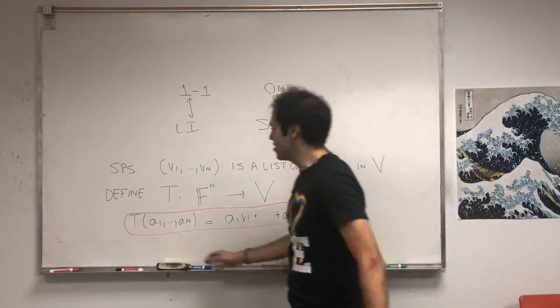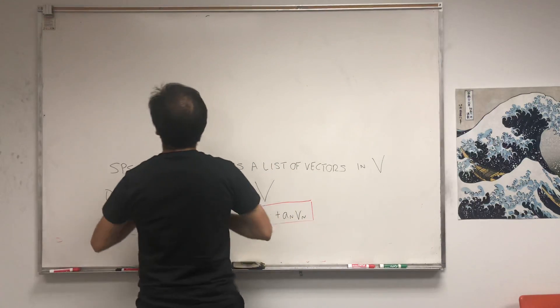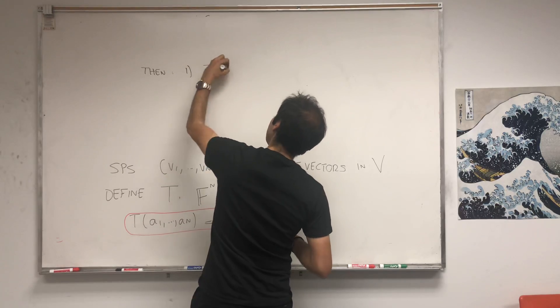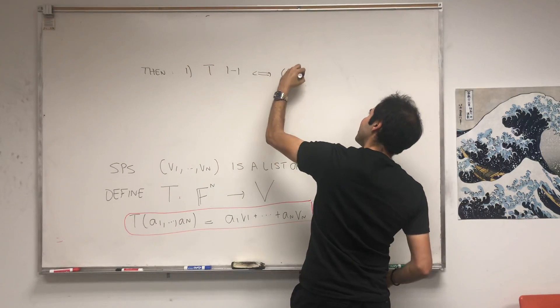And here's what I'm claiming, and here's a beautiful relationship between all those things. Then, first of all, t is 1 to 1 if and only if the list is linearly independent.